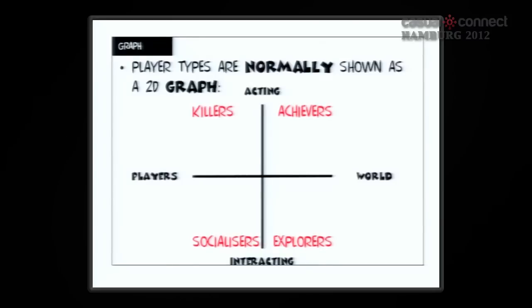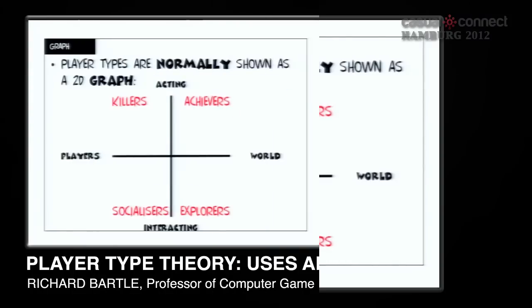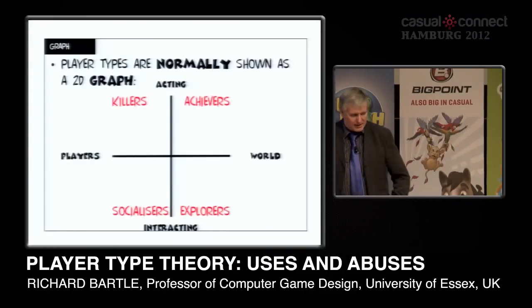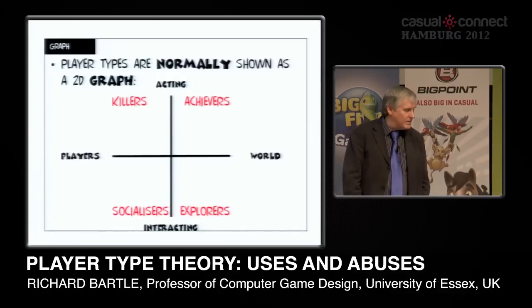Player types are normally expressed as a graph, with players on the left, world on the right, and interacting and acting at the top. There are four quadrants — that's where the types all go — and there's a big theory behind it that explains it all.